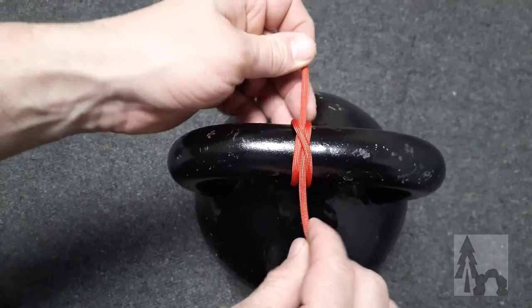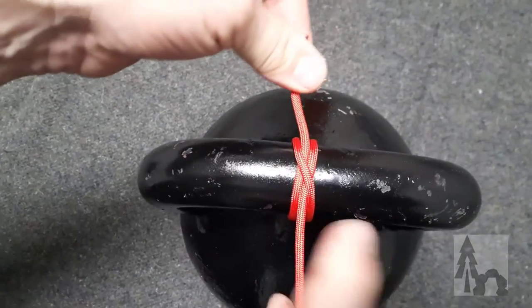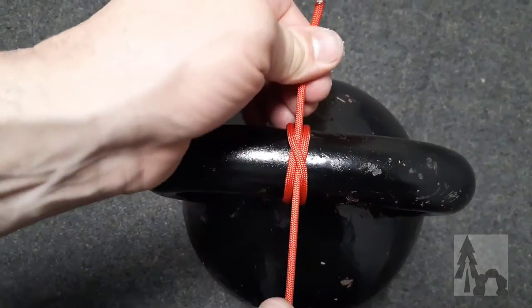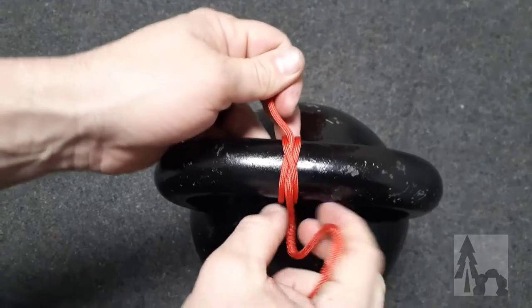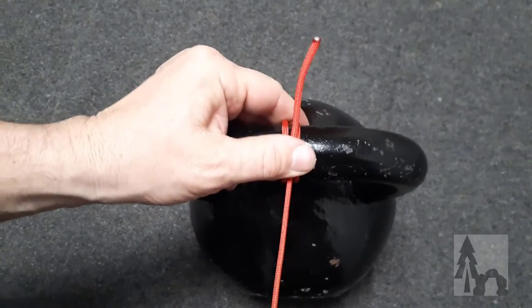So you'll end up with parallel lines running the standing end and then the free end, with a line crossing over the two. Once this is tightened down, this basic clove hitch will hold itself pretty well without collapsing.